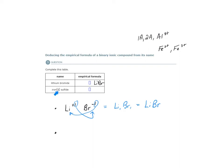It's given to us. This is called the stock system. The stock system uses Roman numerals to indicate the charge of the cation.